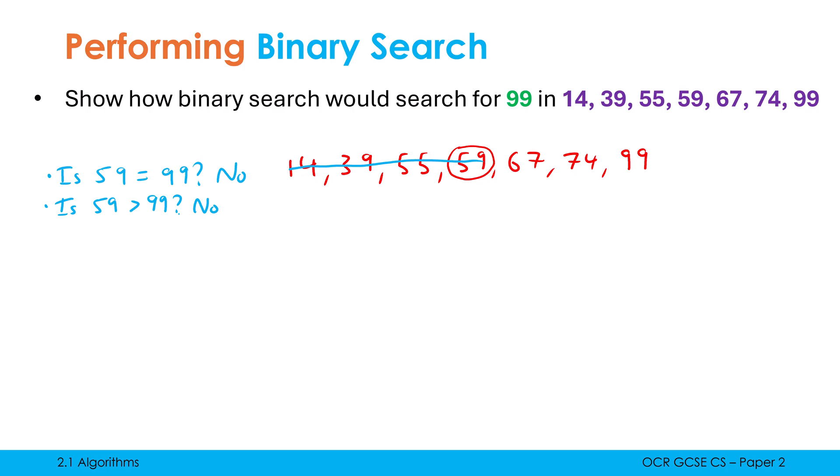So because it's not bigger, I'm going to eliminate the left hand side of the list. My next job is to copy what I've got left in my list. So I've only got 67, 74, and 99. I've eliminated half my list in one step, which is why binary search is so powerful. What's my next step? To choose the next midpoint. The next midpoint is 74 here. So I circle it like before and do the same working out.